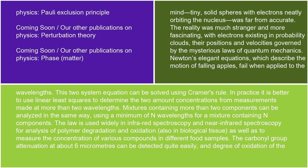In practice, it is better to use linear least squares to determine the two amount concentrations for measurements made at more than two wavelengths. Mixtures containing more than two components can be analyzed in the same way, using a minimum of n wavelengths for a mixture containing n components. The law is used widely in infrared spectroscopy and near-infrared spectroscopy for analysis of polymer degradation and oxidation, also in biological tissue, as well as to measure the concentration of various compounds in different food samples. The carbonyl group attenuation at about 6 micrometers can be detected quite easily and the degree of oxidation of the polymer calculated.